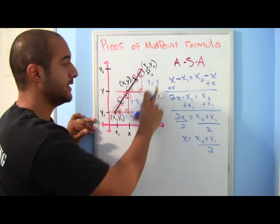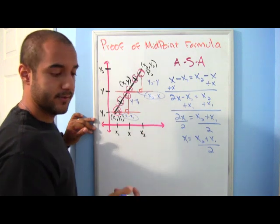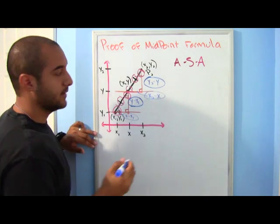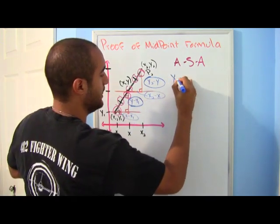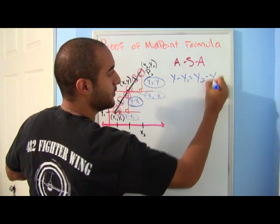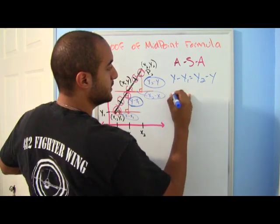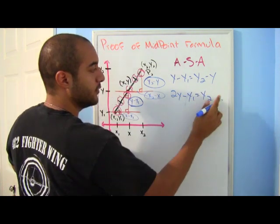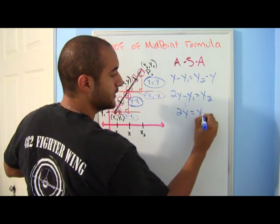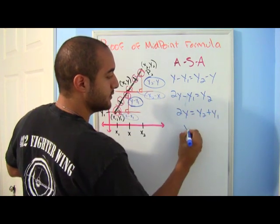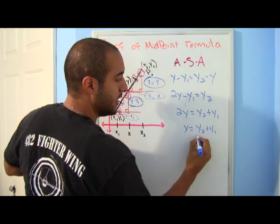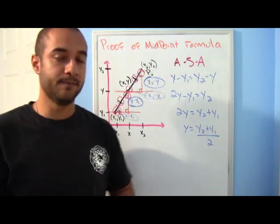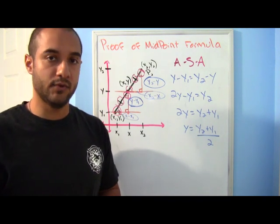The same thing happens with the y's. We know those two sides are the same, so: y minus y1 equals y2 minus y. That's 2y minus y1 equals y2. Bringing that over: 2y equals y2 plus y1. Divide by 2, and y equals (y1 + y2) over 2. And that is how you get the y-coordinate for your midpoint formula. There you have it — your proof for the midpoint formula.